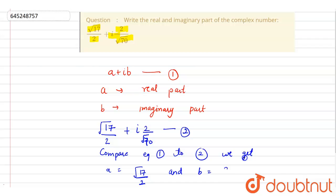so B will be 2/√70. So, we know that A is real part, so √17/2 is real part and this will be imaginary